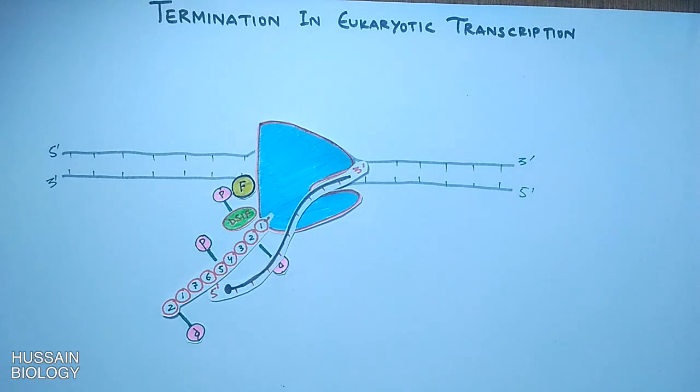We see here the elongation complex has some factors bound like DSIF, factor H, and many others that are not shown here. The important point to be noted here is the phosphorylation of CTD, the carboxy-terminal domain.